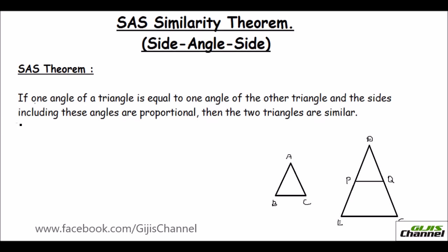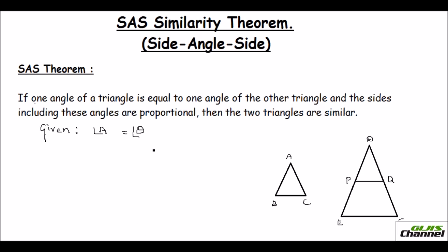To prove this, first let us write what is given and what to prove. Given: one angle is congruent — so let us take angle A is equal to angle D. I am talking about triangles ABC and triangle DEF. So here, it is given that one angle is equal. And the sides including these angles are proportional.